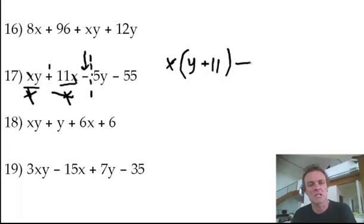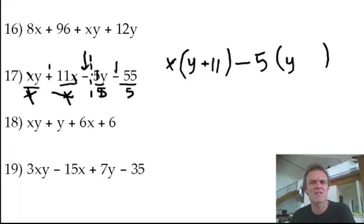What can I factor out of a 5y and a 55? Well, it's just the 5. So I'm going to put a 5 here. Now, remember, this second parenthesis should be the same as the first. When somebody will make a mistake of looking at this and going, if I divide by 5, that cancels. There's a y. But look, there's a minus here, isn't there? Well, remember, it's got to be the same as the first.